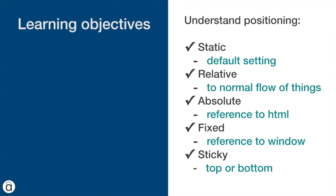The next one is relative, and effectively relative is relative to the normal flow of things on our web page. You'll remember from the last video we spoke about block elements — there's a heading, then a paragraph, and another paragraph, and so on. Those were block elements and they are stacked one above each other. When we use positioning relative, it's relative to that normal flow of things, and we'll see an example in a moment when we do some coding.